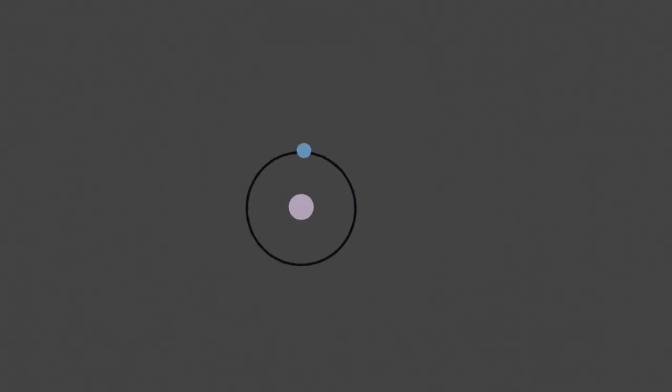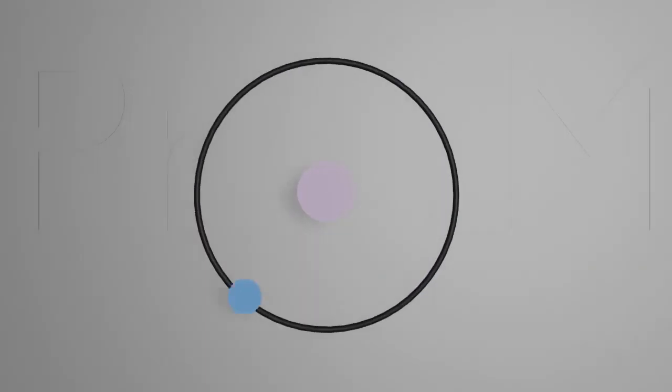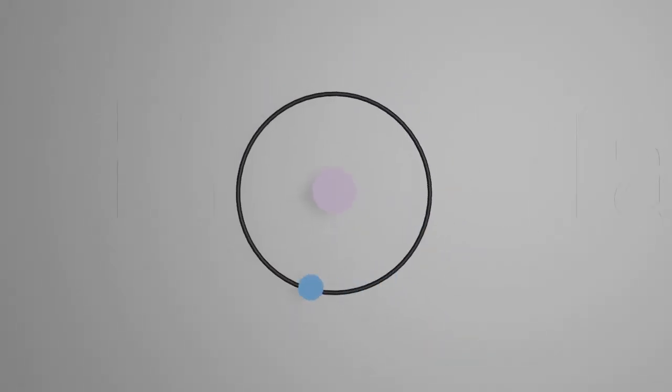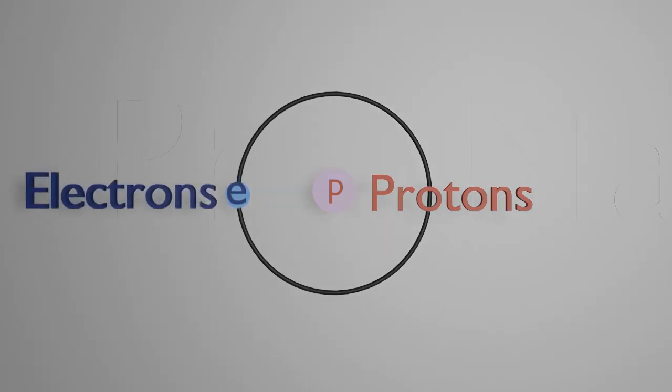An atom contains two types of charged particles. Positive particles are called protons. Negative particles are called electrons.